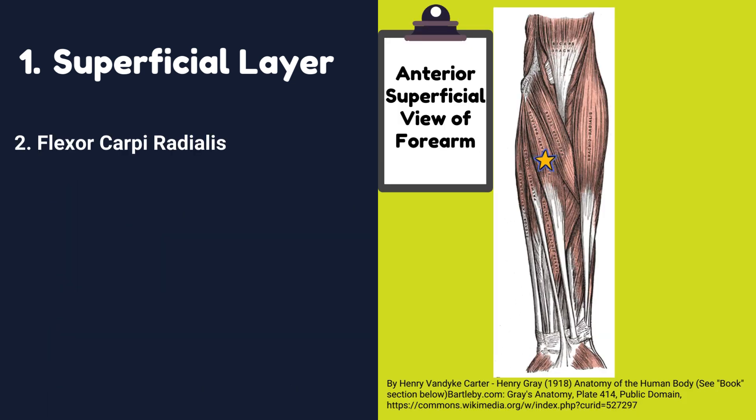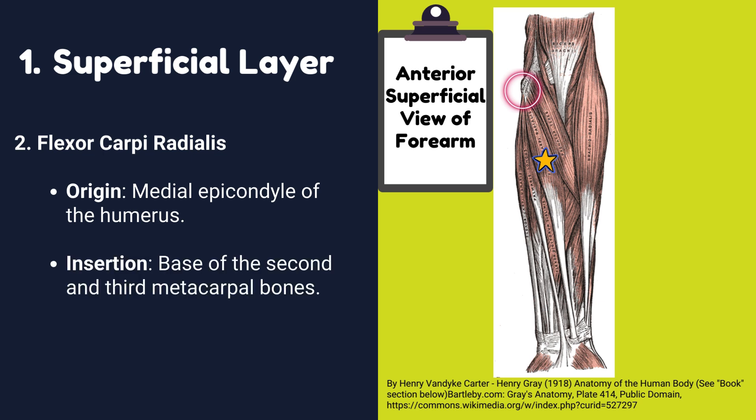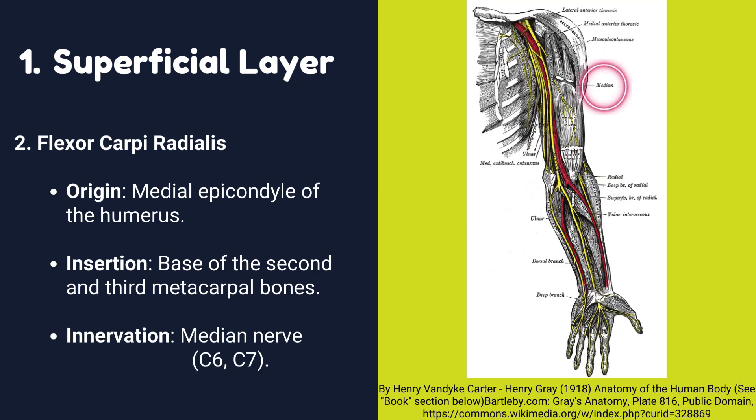Number two: Flexor carpi radialis. Origin: it originates from the medial epicondyle of the humerus. Insertion: it is inserted into the base of the second and third metacarpal bones. Innervation: it is innervated by the median nerve.